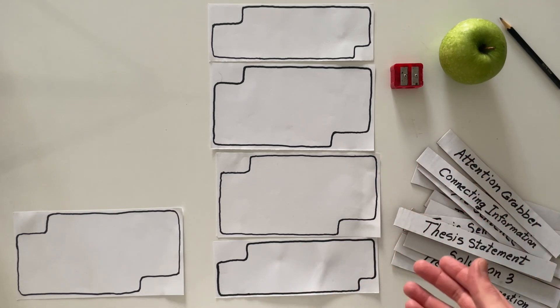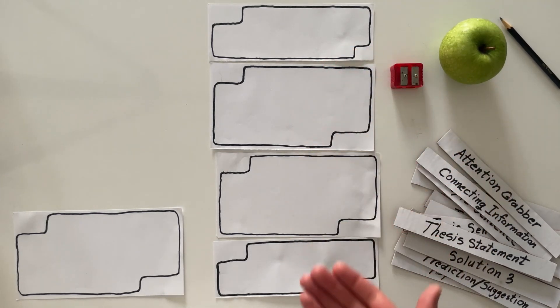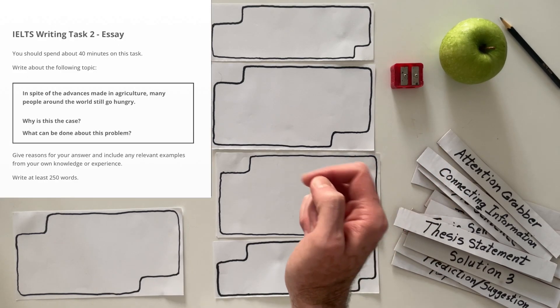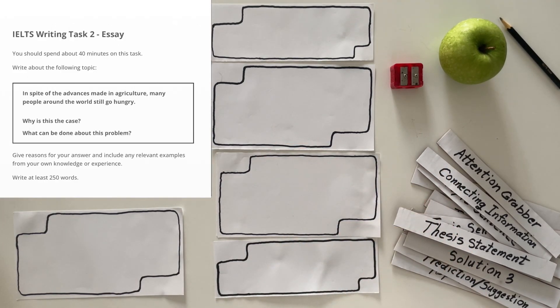Hi there, and welcome to this episode of Write With Me at IELTS Juice. We have an essay, and the rubric is going to appear over here that says, 'In spite of the advances made in agriculture, many people around the world still go hungry.' Unfortunately, that is a fact.